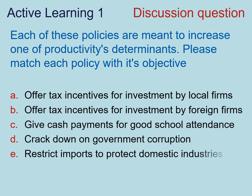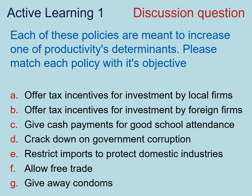Now that we have a rigorous definition for productivity, let's use it in this active learning exercise. Productivity equals technology, or total factor productivity, times a mix of capital per worker, natural resources per worker, and human capital per worker. Each of the following policies is meant to increase or affect one or more of these determinants of productivity. On Top Hat, please go and match each policy with its objective.